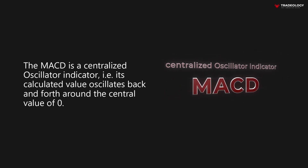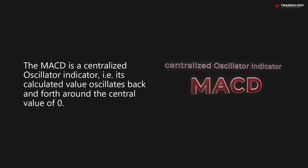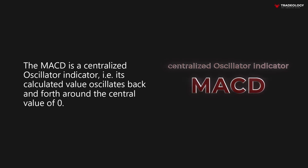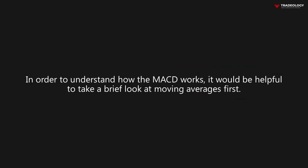The MACD is a centralized oscillator indicator. In other words, its calculated value oscillates back and forth around the central value of zero. In order to understand how the MACD works, it would be helpful to take a brief look at the moving averages first.